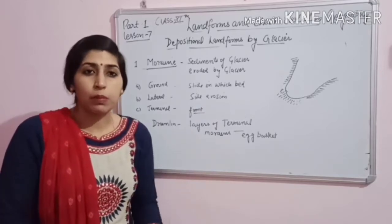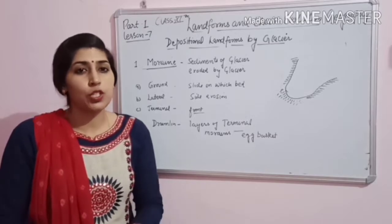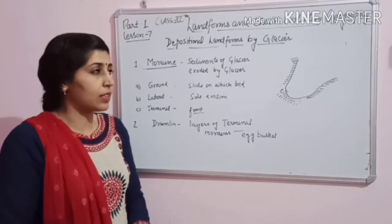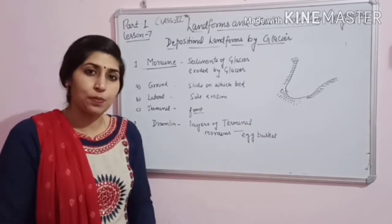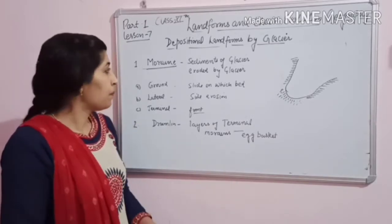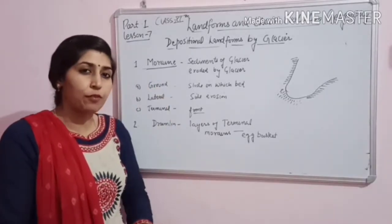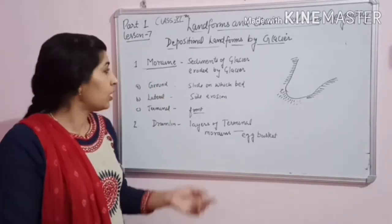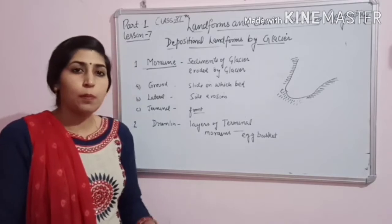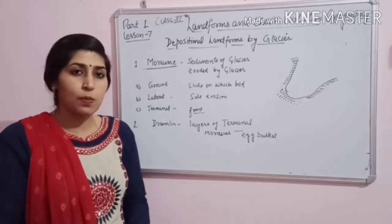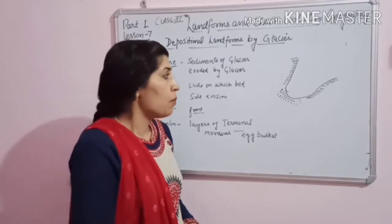After doing erosion, what depositional activities does the glacier do, what landforms does it create — aaj hum padhenge. So the first landform that is made by the glacier after deposition is moraines. In depositional activity, the first thing any glacier creates is moraines.